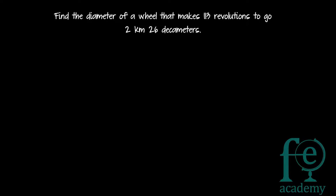113 revolutions are required by a wheel to go 2 kilometers and 26 decameters. Find the diameter of the wheel. First, convert to meters. One decameter equals 10 meters, and 1 kilometer equals 1000 meters.